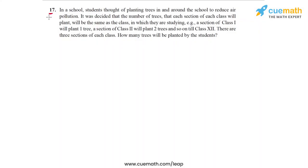In question 17 of the exercise, the problem statement is as follows: In a school, students thought of planting trees in and around the school to reduce air pollution. It was decided that the number of trees that each section of each class will plant will be the same as the class in which they are studying. For example, a section of class 1 will plant one tree, a section of class 2 will plant two trees, and so on till class 12. There are three sections of each class. How many trees will be planted by the students?